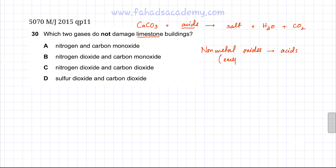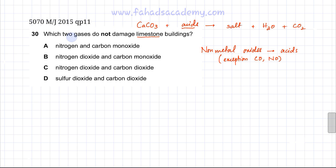There are a few exceptions which are neutral gases. The number one exception is carbon monoxide — that's neutral. Nitrogen monoxide is also neutral. So those are the exceptions. Looking at option A, it gives you carbon monoxide, which is neutral and not acidic.